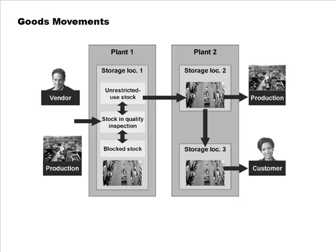Goods received may go into one of three categories: unrestricted, blocked, or in quality inspection. There is possible movement from plant to plant, which is also a goods movement, as well as movement within the plant. There is also outbound movement of goods — issuing raw materials for production and sending shipments of finished goods to customers. These are all goods movements we are interested in tracking.